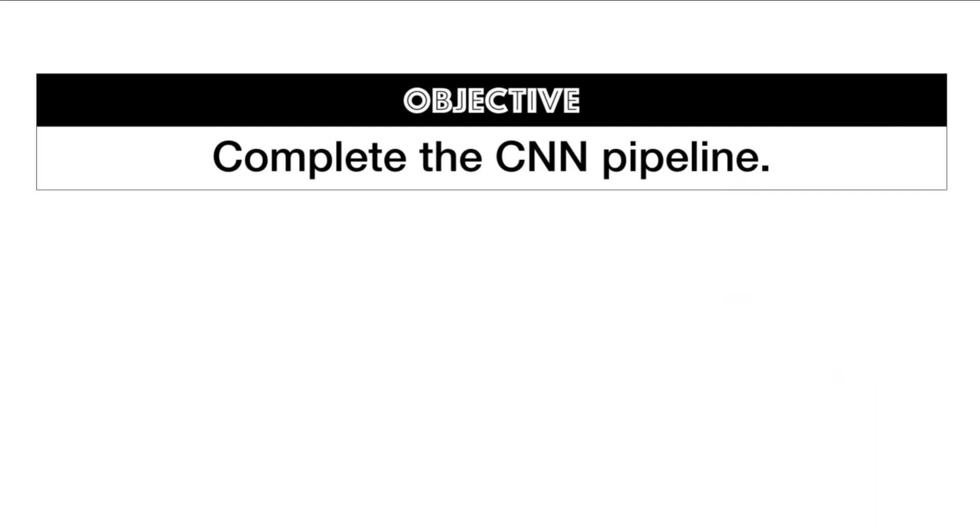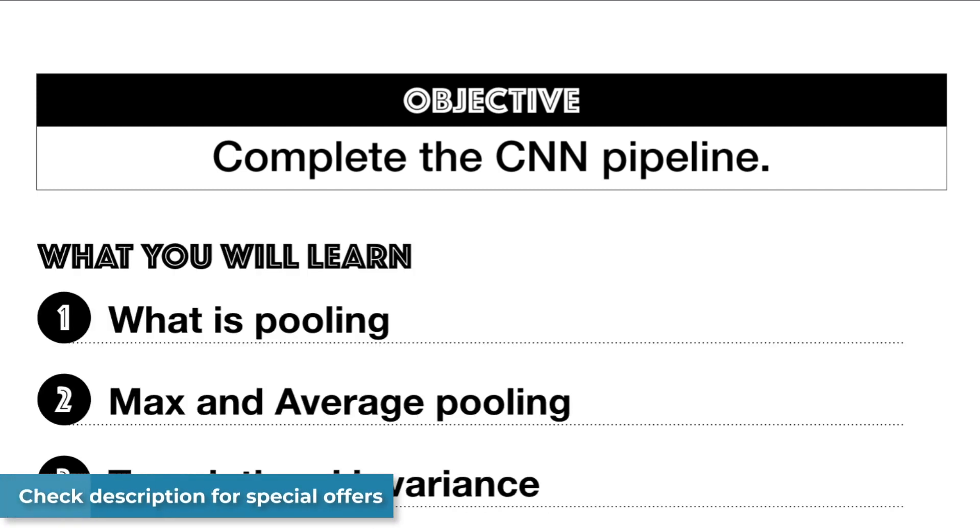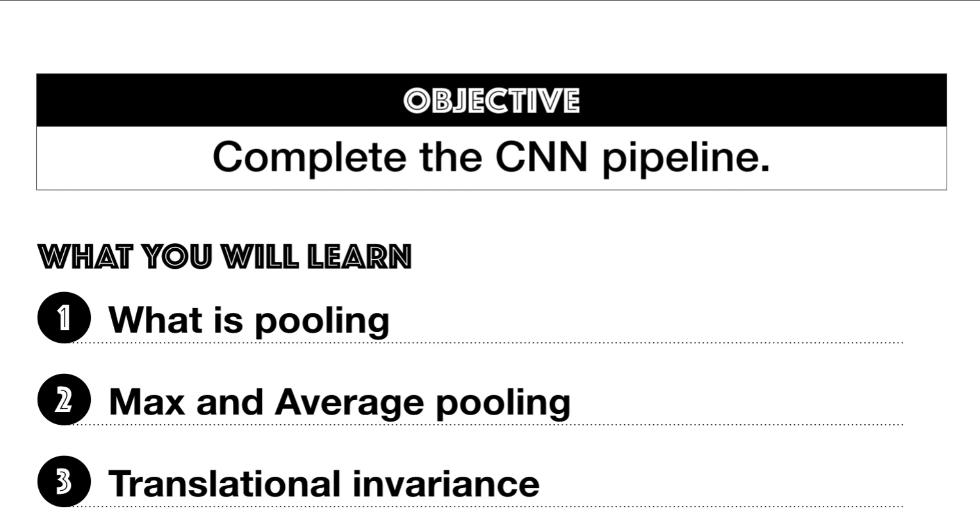Now the objective of this video is to complete the CNN pipeline and to understand how we can use pooling, what is pooling, what is the difference between max and average pooling, and more importantly get acquainted with a super interesting concept which is called translation invariance.